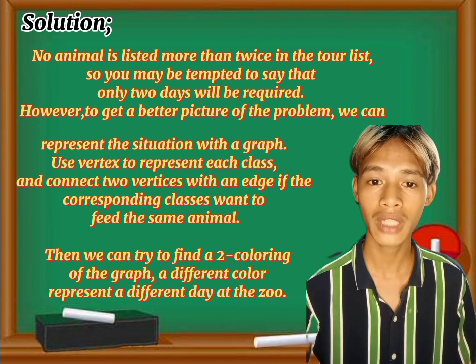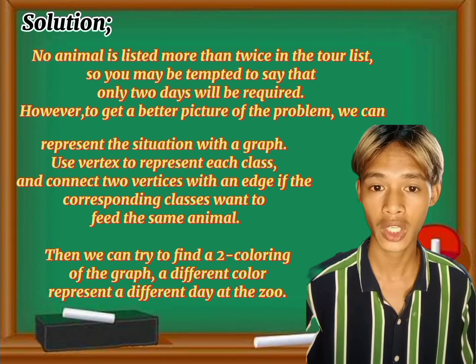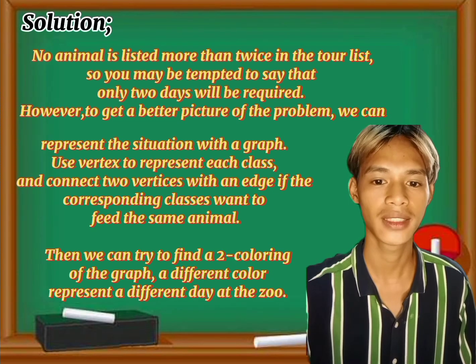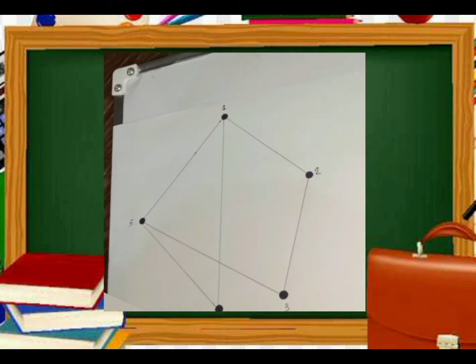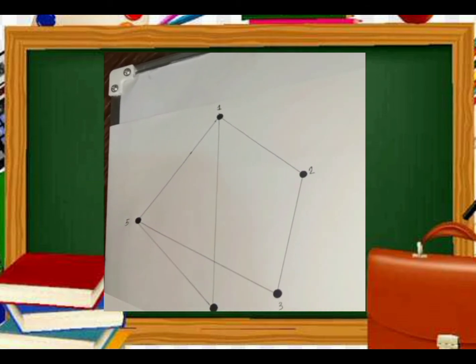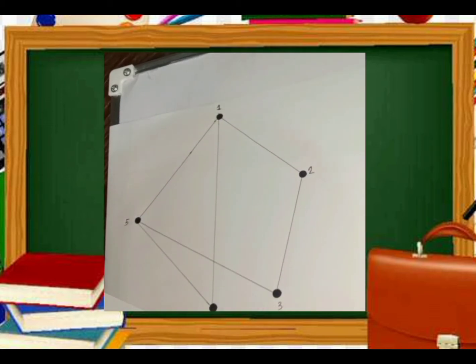Now I'm going to show you how the graph is constructed. As you can see on the screen, this is the constructed graph of the given situation. We use a vertex — the dot that you see on the screen — to represent each class. We have five dots representing each of the five classes of the elementary school: class one, class two, class three, class four, and class five.